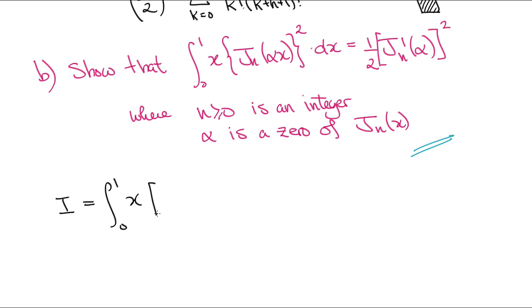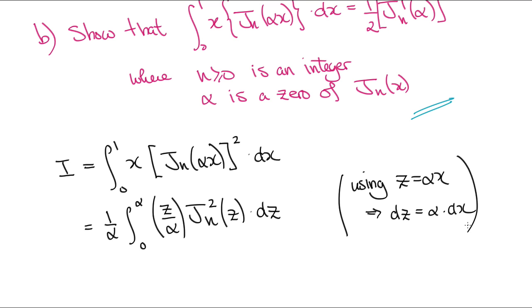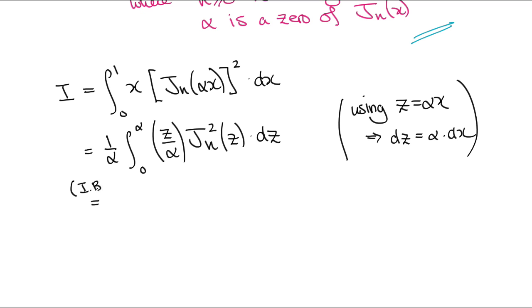If we write down the integral as I, then we can use the substitution z equals alpha x, and so dz equals alpha dx, to put the integral into the following form from z equals 0 to z equals alpha. Integration by parts now gives the two terms.